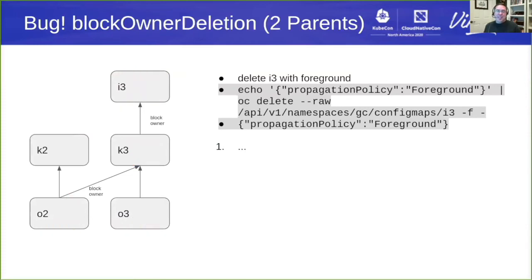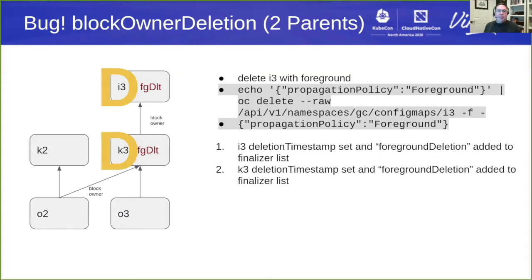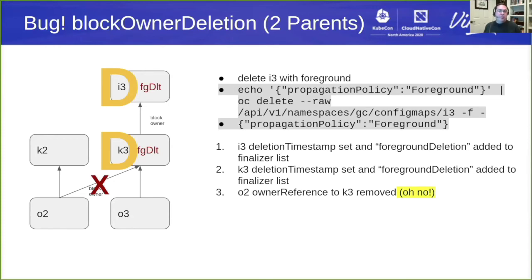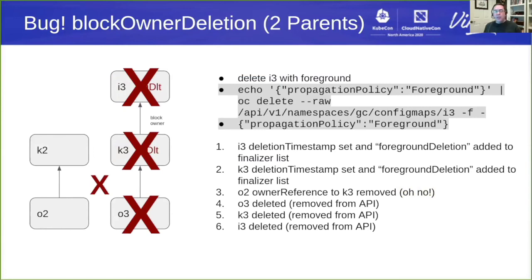We do have bugs. One of them is with block owner deletion. If you have two parents of a child, it doesn't behave right. If you delete i3, it's marked for deletion, and we reach the point where k3 should not be deleted until o2 has been removed. But the garbage collection controller removes the owner reference from o2 to k3, making it a valid target for deletion so k3 can be deleted. This is a bug. We end up deleting i3, k3, and o3 because the owner reference from o2 no longer exists. We don't currently have a PR to fix this bug.